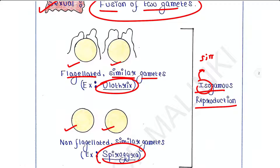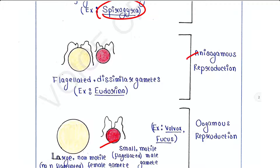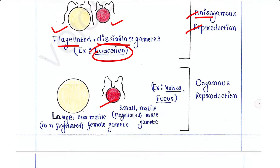Fusion between two similar gametes is called isogamous reproduction — 'iso' means similar. The second type is anisogamous reproduction, where the gametes are dissimilar. Both gametes are motile and flagellated, but they differ in size and shape. Fusion between two such gametes is called anisogamous reproduction. An example is Eudorina.